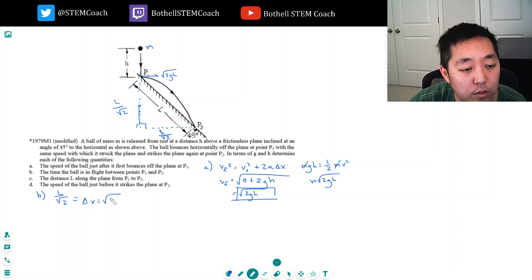It would travel l over root 2 equals delta x, which equals simply the velocity times time, square root of 2gh times t. Okay, so that's the x direction kinematic equation. It's constant in the x direction until it hits the ground, but I don't know what l is, so because I'm just solving for t, I can't put it in terms of l.